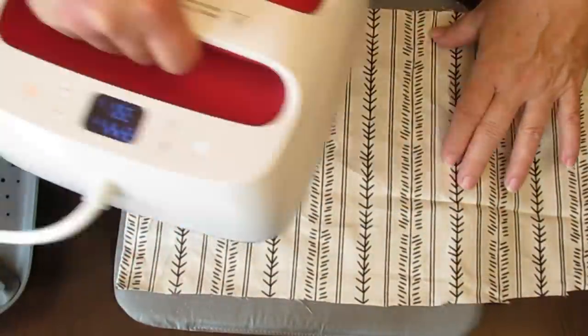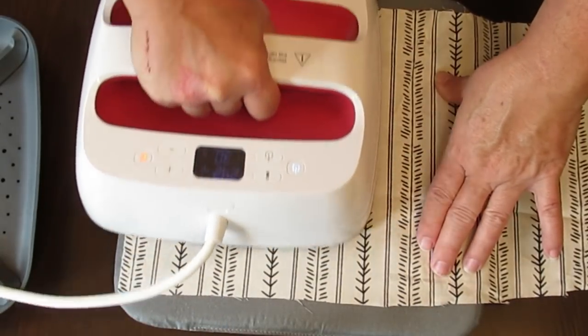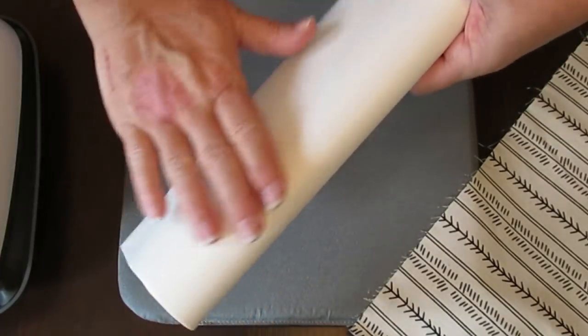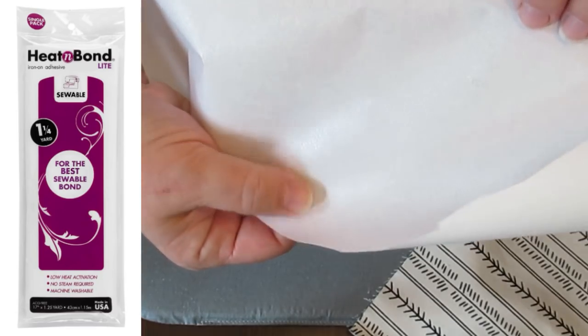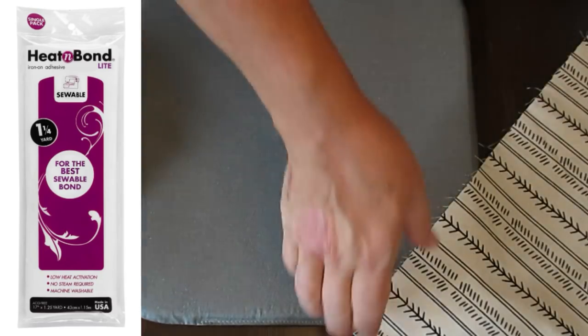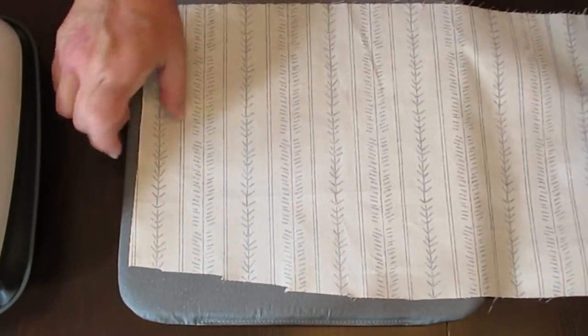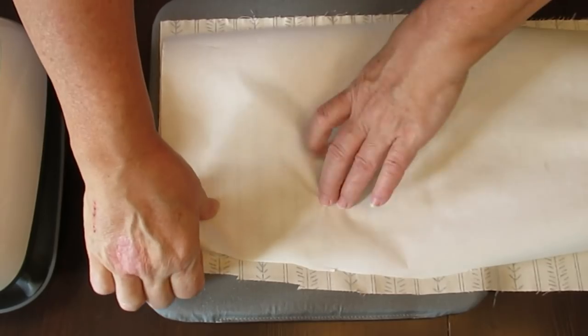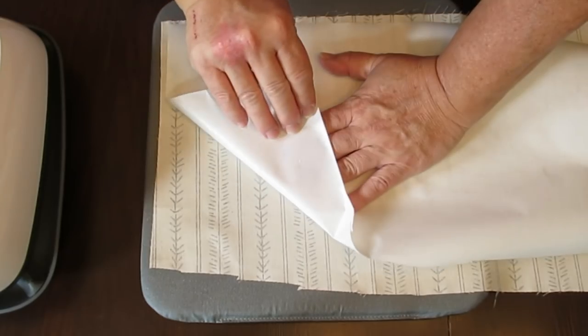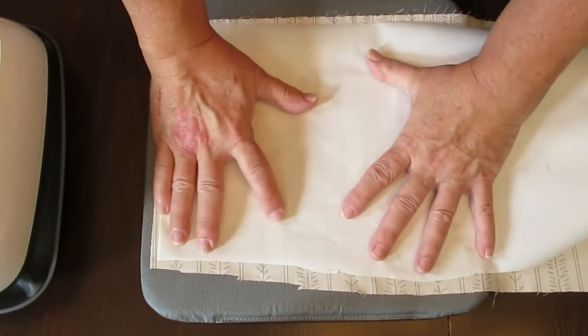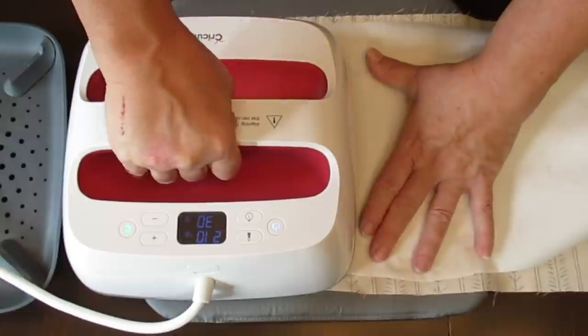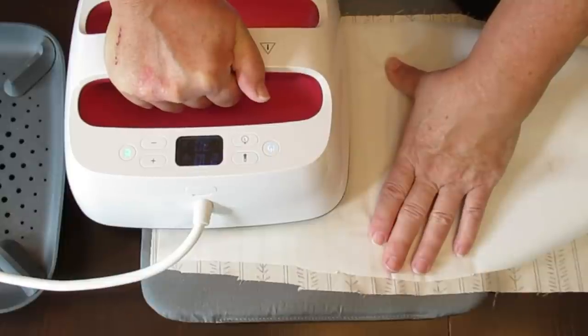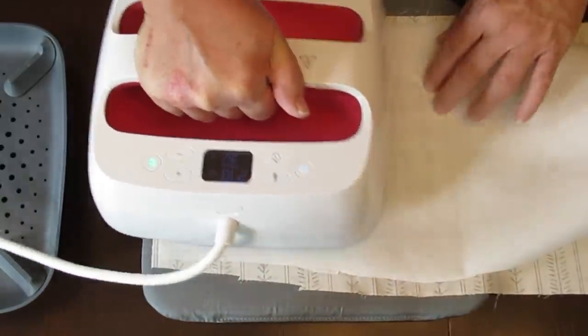For this project, I'm going to start out by just using my EasyPress to iron the fabrics and make them nice and crease free. You can also just do this with a regular iron. I am also using a product today called Heat Bond Light. It has a smooth side and it has a rough side. The rough side is where the adhesive is. So I'm going to be cutting a piece of the Heat Bond Light to fit the size of my piece of fabric. I'll be putting the rough side of the Heat Bond onto the back side of my fabric, and I'm going to be ironing it on to make sure that the adhesive bonds to the fabric.